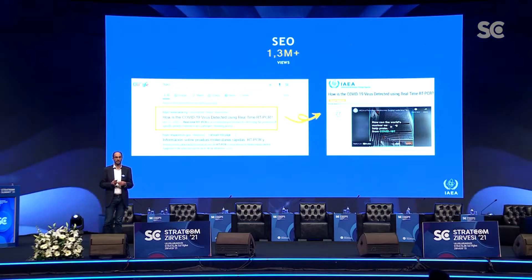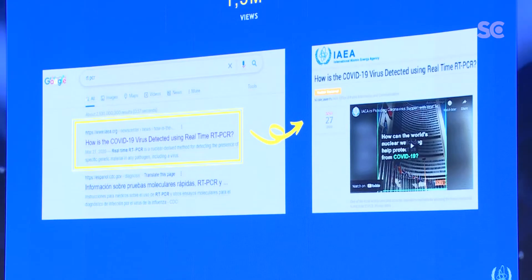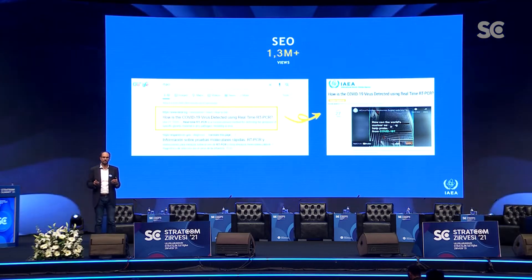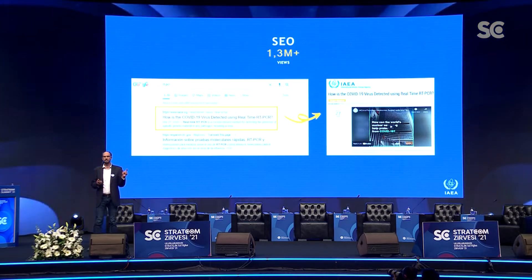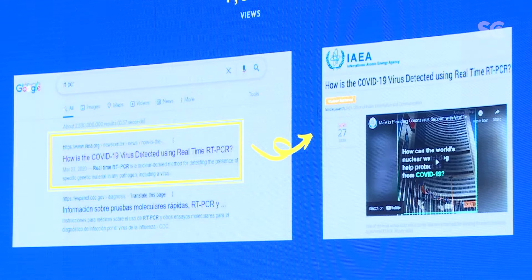PCR, which has become a household name over the last few years, is actually a nuclear-derived technology. We at the IAEA have been helping countries for decades to use PCR to detect viruses. When the pandemic started, we produced an article explaining how RT-PCR works using nuclear-derived techniques. This search engine optimized article got us 1.3 million new visitors. If you search for RT-PCR in Google, we'll be the first result; if you search for just PCR, we'll still be among the top five.